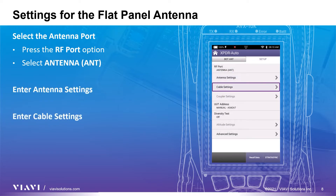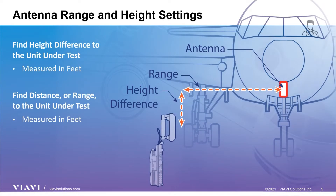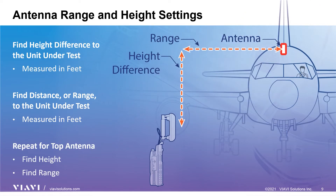The two settings related to the antenna are Antenna Settings and Cable Settings. This illustration shows how to find the antenna range and height values. The height value is the difference in height between the flat panel antenna and the aircraft antenna. If the test set is placed physically closer or farther away than the range entered, the resulting test readings will be inaccurate. The top antenna range and height also need to be entered when testing diversity transponders, which allows for separate testing of the top and bottom transponder channels.